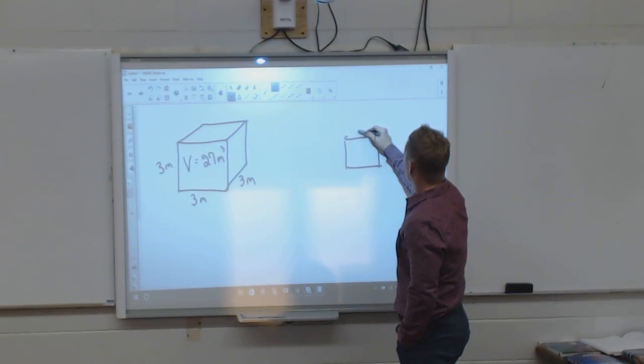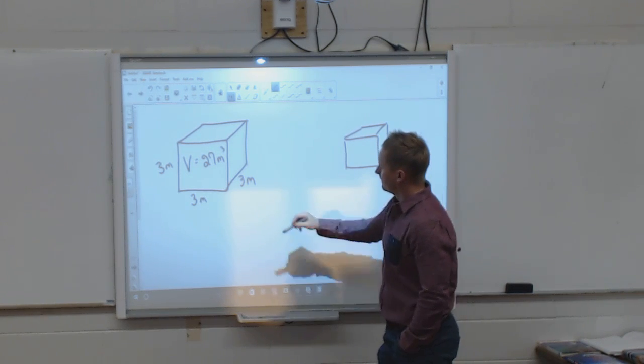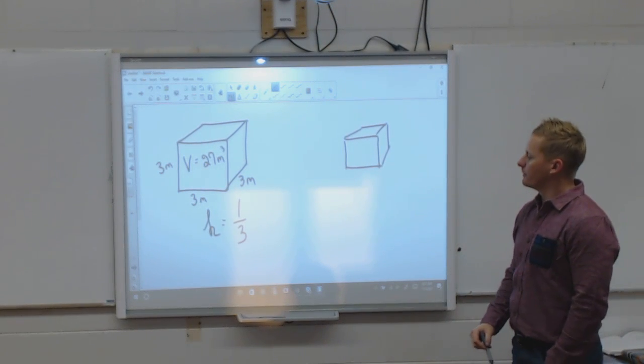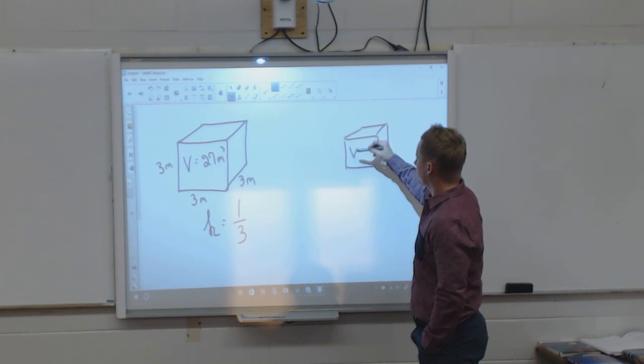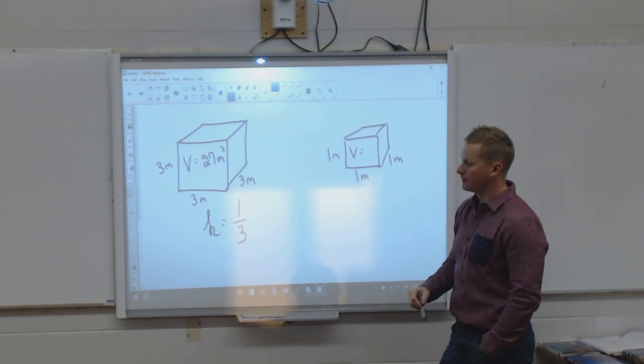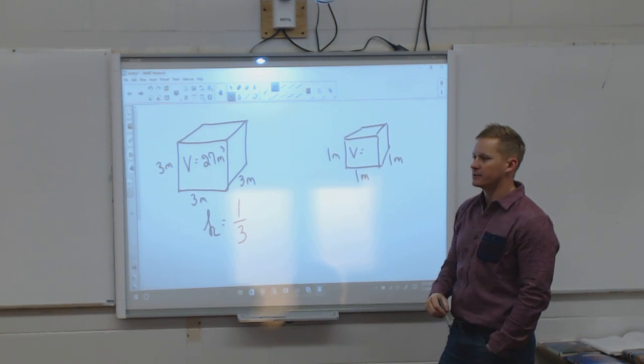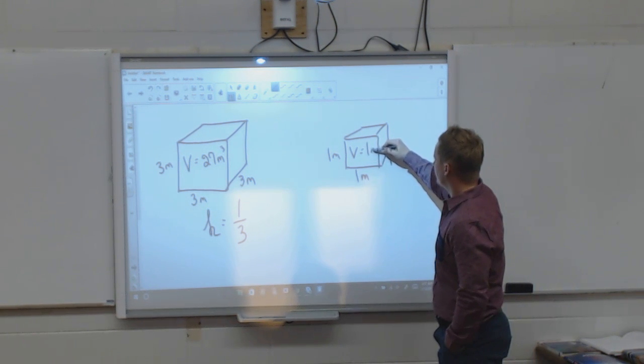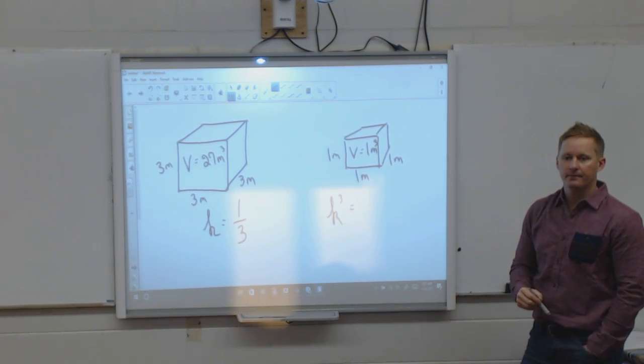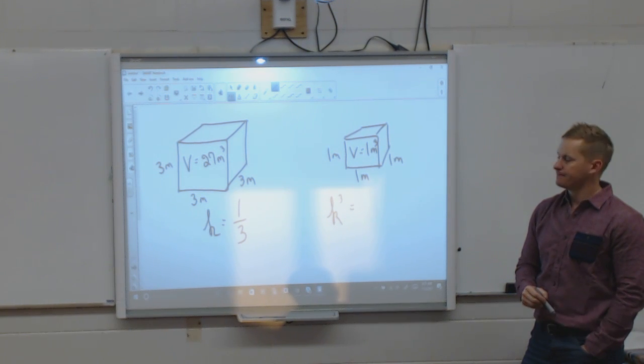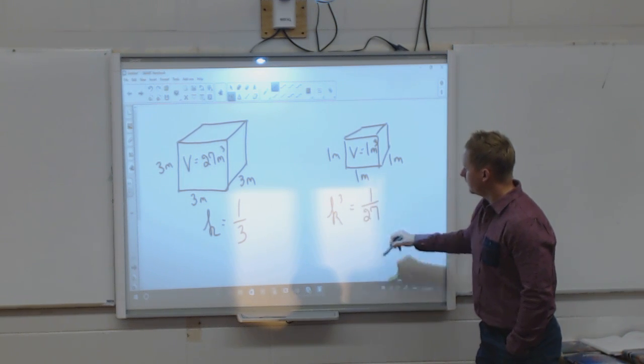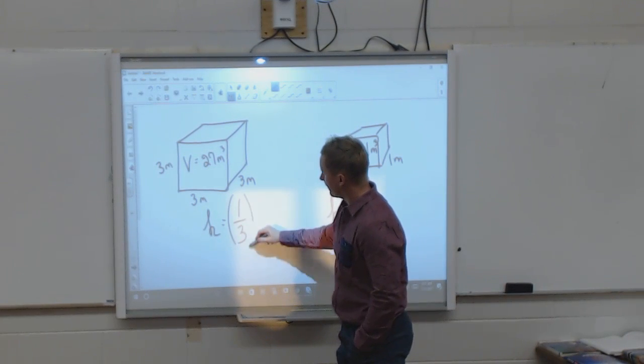Alright, let's reduce it. I'm going to reduce it by a K of one third. So by reducing it by a K of one third, what is going to happen to my volume? I'm going to take a third away from each of those, which changes this to a meter by a meter by a meter. So what is the volume of this cube then? 1 meter cubed. So my volume then was reduced by a factor of what? 27, right? It is that one third value cubed.